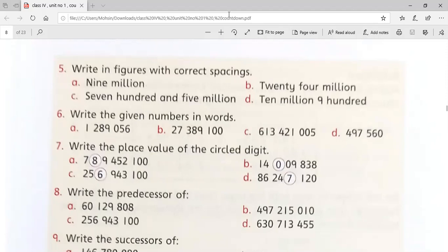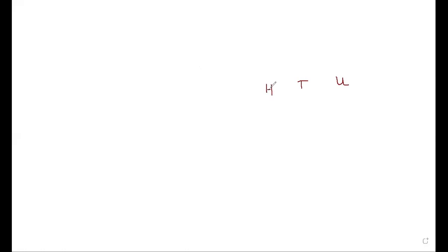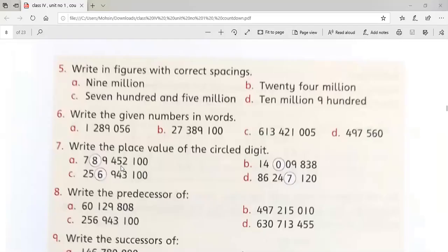How we can find the place value of a digit — I'm going to do it again for you, to remind you how we do these things. Look at the board. We start from the unit, then comes tens, after tens hundreds, then thousands, then ten thousands, then hundred thousands, then million, then ten million, and also hundred million.